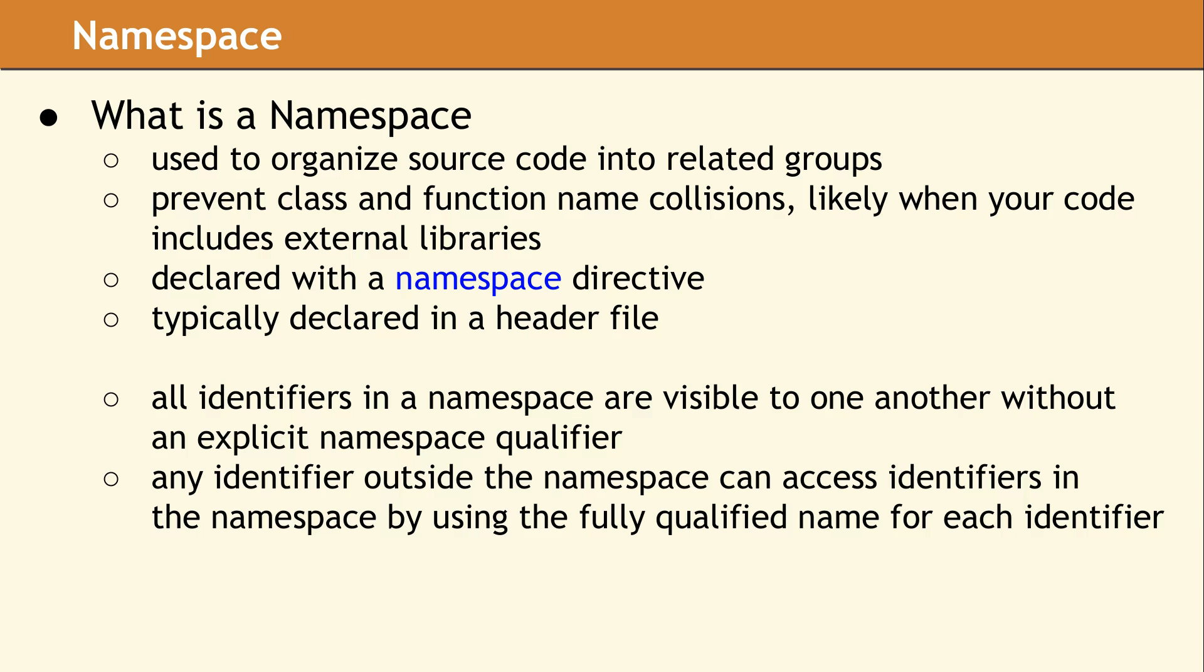A namespace is a way to collate a section of your code under the umbrella of a specific name. The main purpose for using a namespace is to prevent naming collisions by isolating your code. Every class and function in your program must have a unique name. If you're working on a large project with multiple developers, or your code base makes use of multiple libraries, it can be a really good idea to put various sections of your code in a namespace.